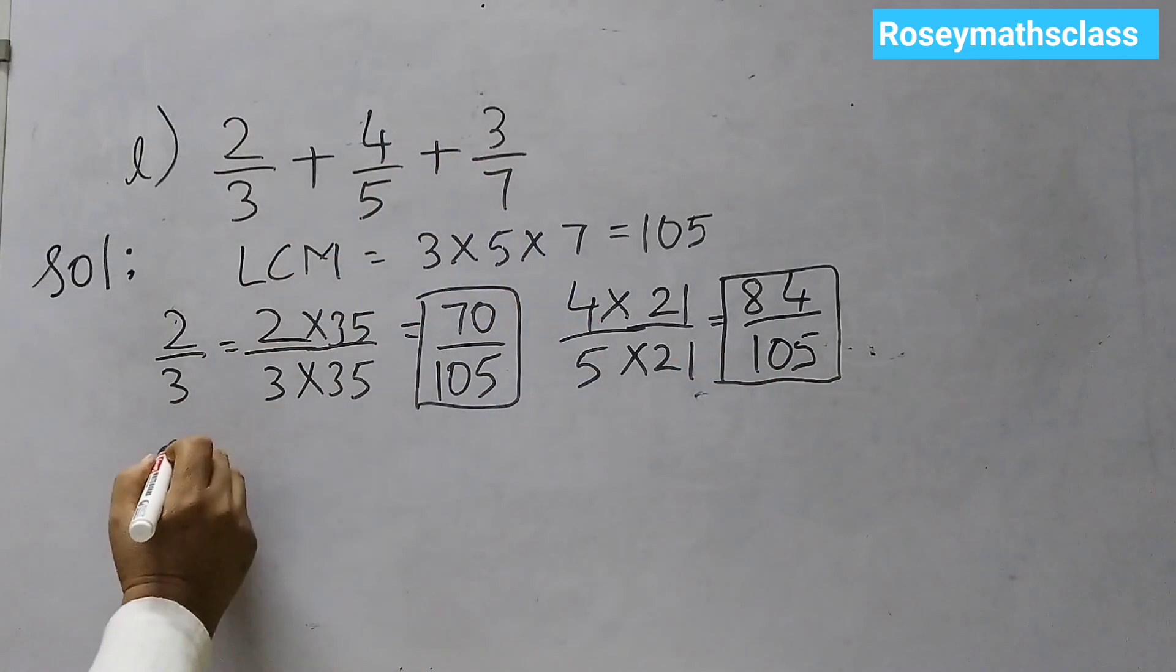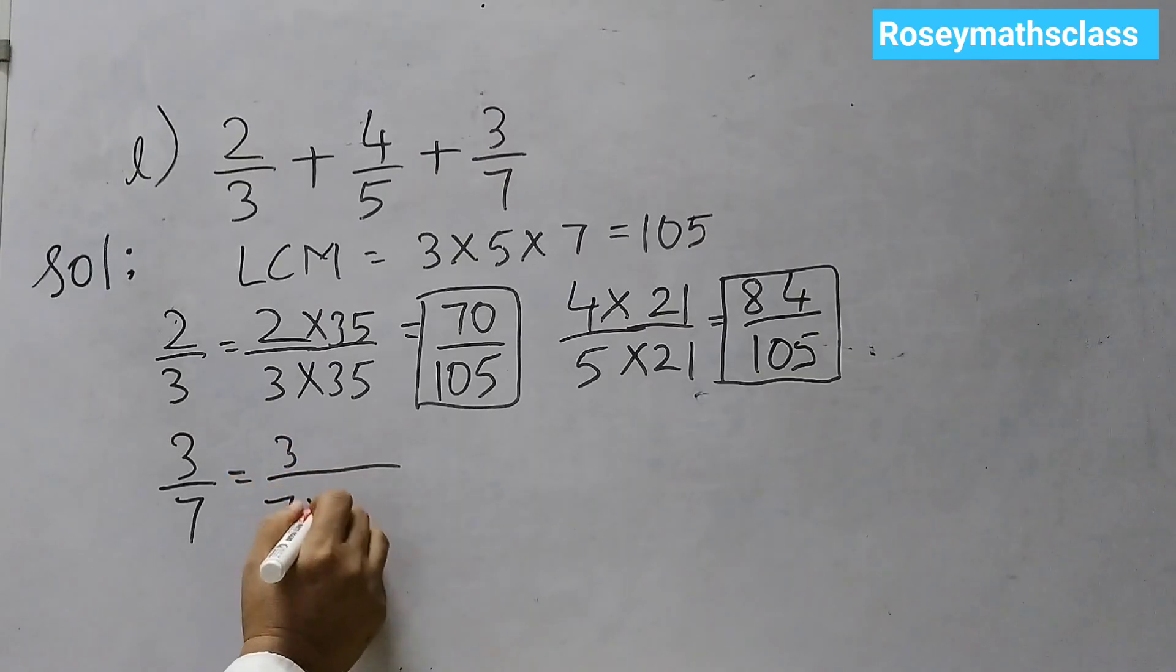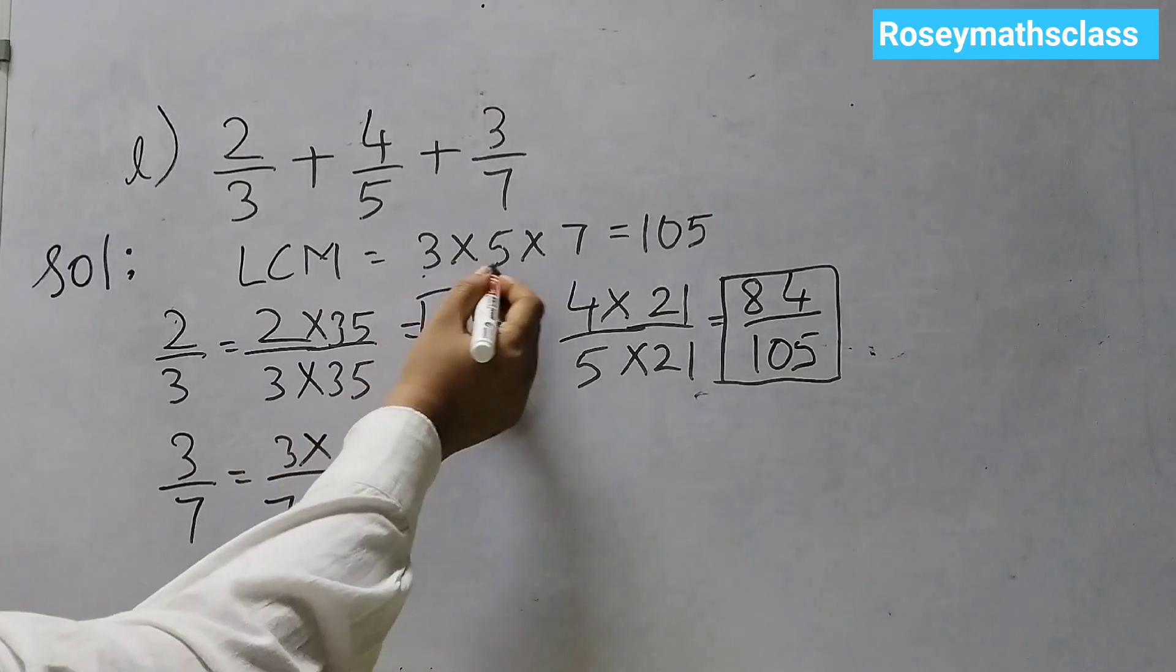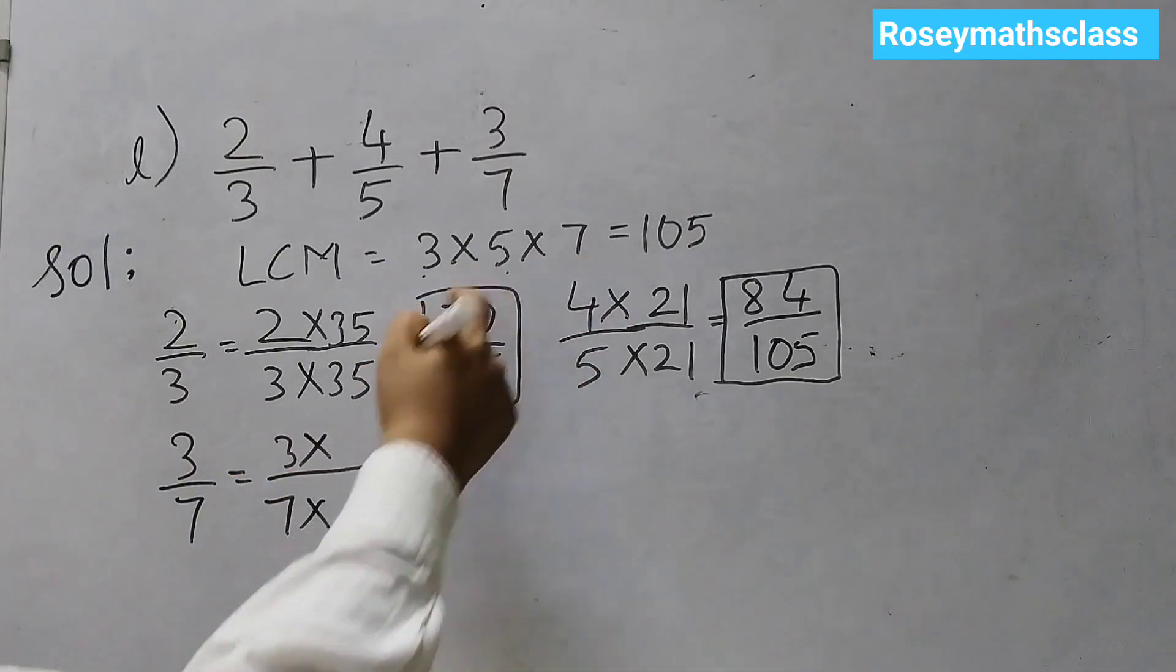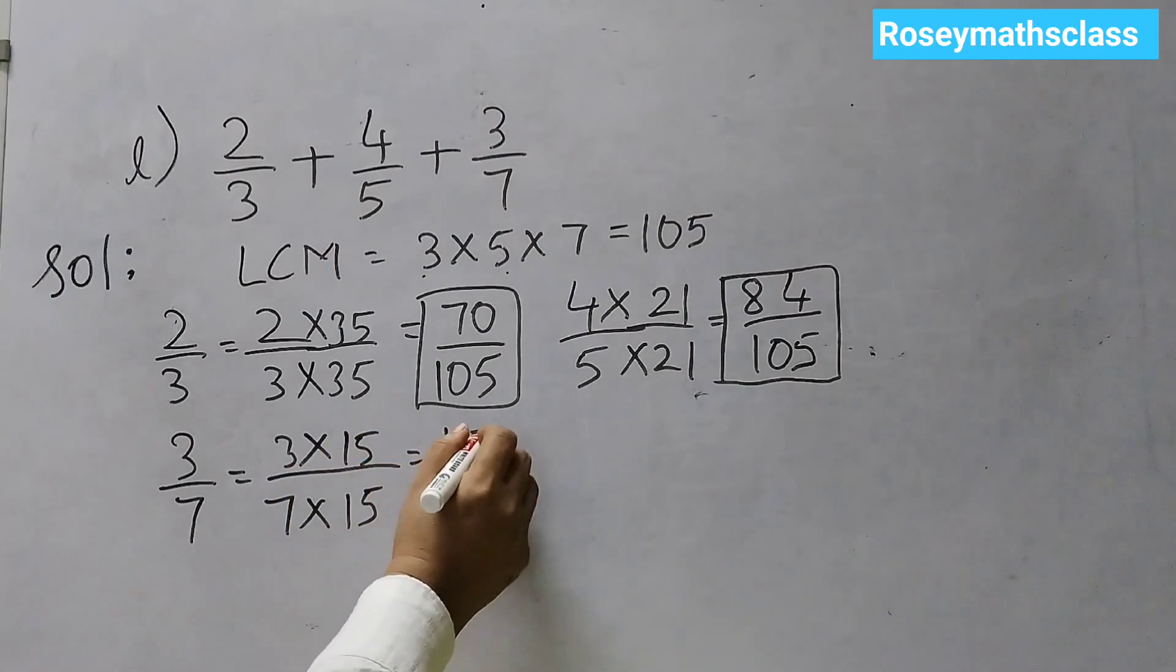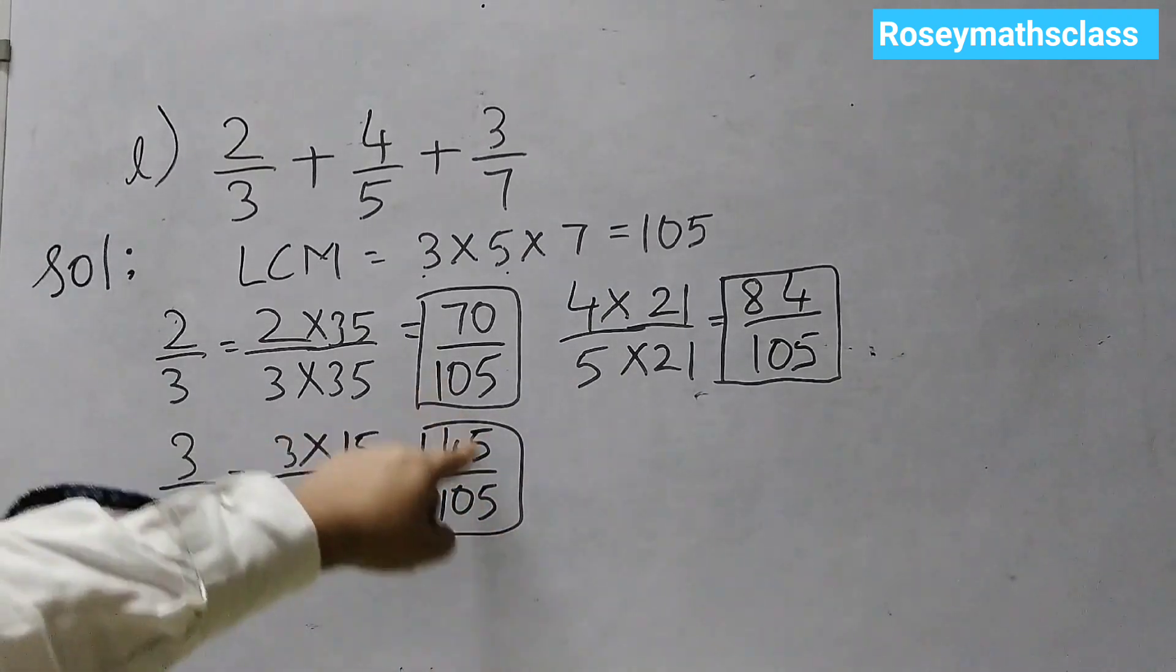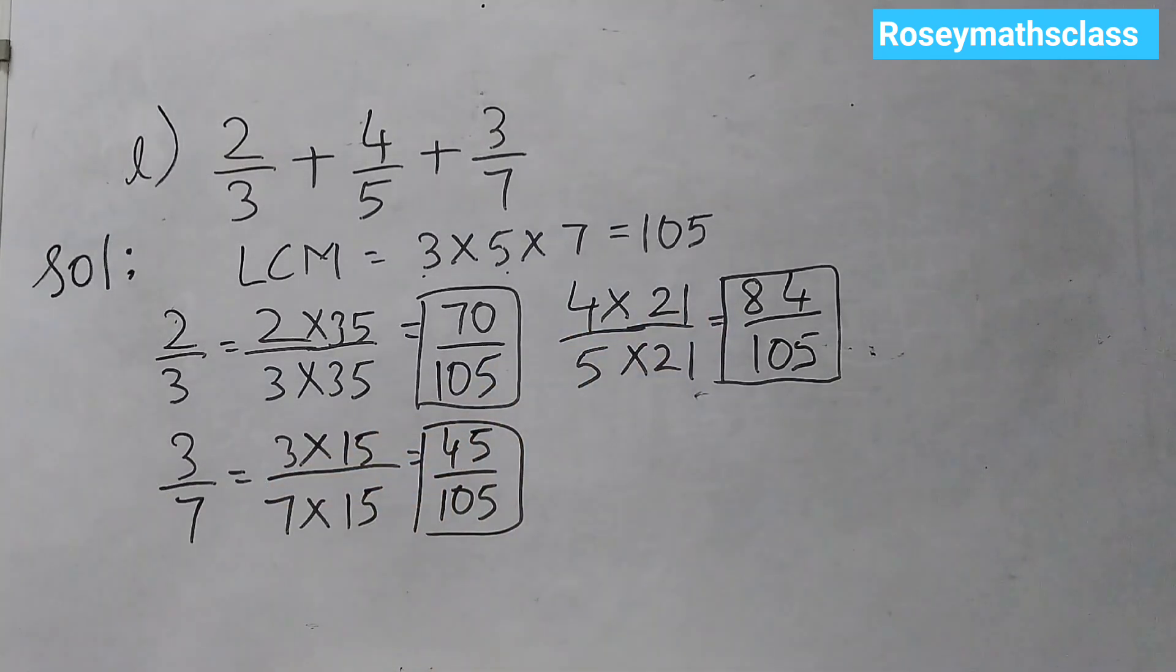And now, 3 by 7. So, 3 by 7 is equal to multiply by, hide 7, 3 fives are 15. Multiply by 15. So, that's 45 over 105. So, these 3 fractions we are going to add. Make a note of it because I am going to erase it.